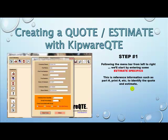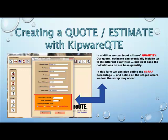Step number one: following the menu bar from left to right, we'll start by entering some estimate specifics. This is reference information, such as part number and print number, to identify the quote and estimate. In addition, we can input a base quantity. Our quote and estimate can eventually include up to six different quantities, but we'll base the calculations on this base quantity.